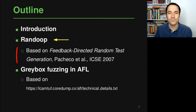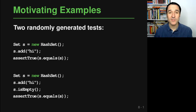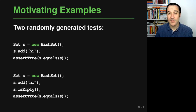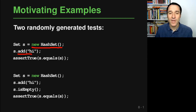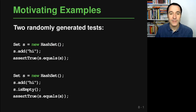Before looking into the details of this approach, let me show you a few examples of tests that Randoop can actually generate. Randoop is a tool for testing Java classes and the methods provided by these classes. In this example, let's assume we want to test the HashSet class provided by the Java util library. The test generator Randoop would generate tests that create an instance of the class under test, call some methods on it, and eventually have assertions like checking that the set is equal to itself.